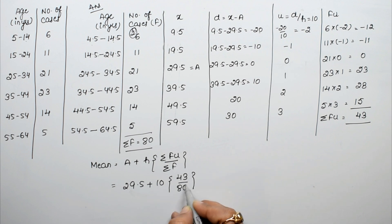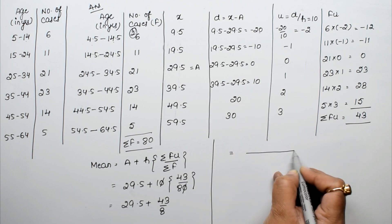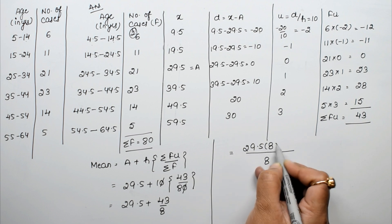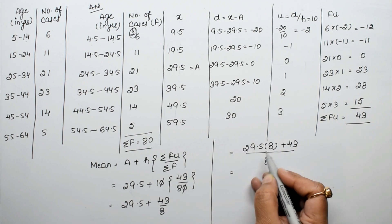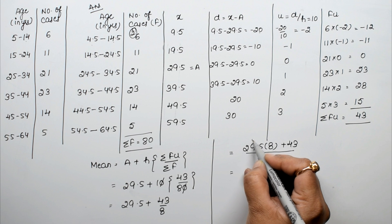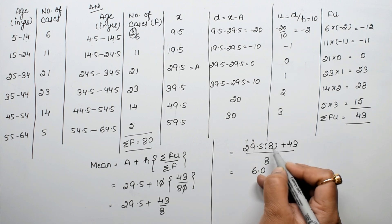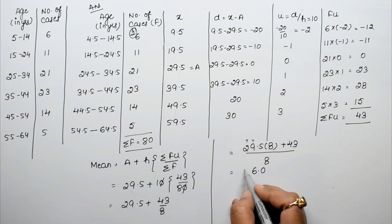Substituting into the formula: Mean = 29.5 + 10 × (43/80). The 10 and 80 simplify to give 29.5 + 43/8. Multiplying out: 29.5 × 8 = 236, so we compute (236 + 43) / 8 = 279/8.